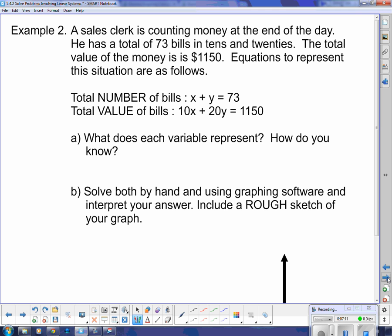Okay, so now we're going to do this one. A sales clerk is counting money. At the end of the day, he has a total of 73 bills in tens and twenties. The total value of the money is $1,150, and the equations to represent the situation are as follows. So we get the total number of bills. So we get some 10s and some 20s, and we add up how many of them we got, and we got 73.